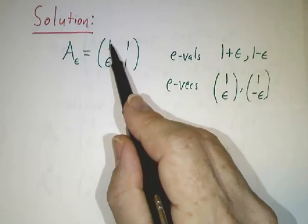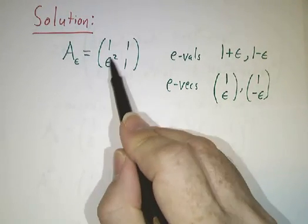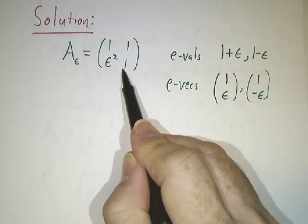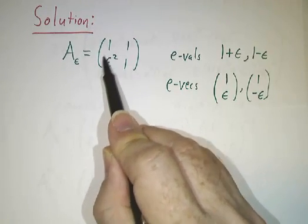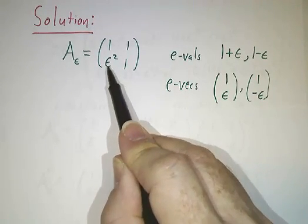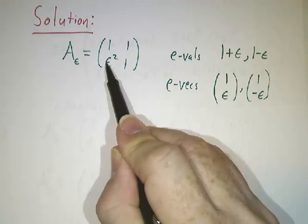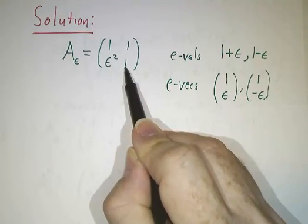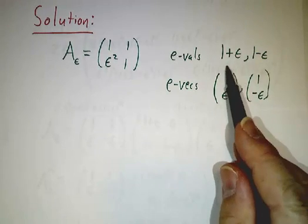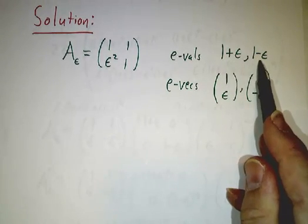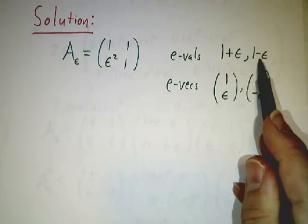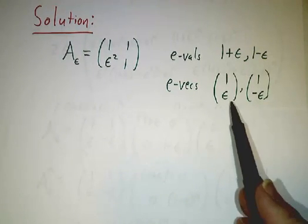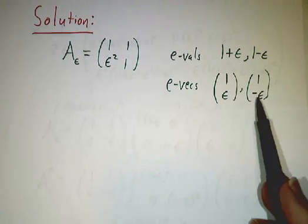We're going to look at the matrix, not 1, 1, 0, 1, but 1, 1, some really small number. So in terms of epsilon, we're going to put an epsilon squared here. And that makes the determinant 1 minus epsilon squared. The trace is still 2, so the eigenvalues are 1 plus epsilon and 1 minus epsilon. They add up to 2, and their product is 1 minus epsilon squared. And you can work out what the eigenvectors are. They're 1 epsilon and 1 minus epsilon.